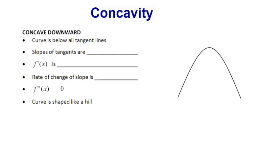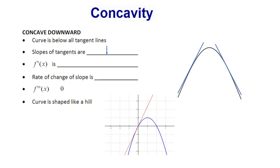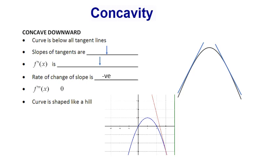Concave downward — the opposite is true. The tangent lines are now all above the curve. The slopes of these lines follow a decreasing pattern. Watch the tangent line as it moves along the surface of the curve — this time it rotates in a clockwise direction, meaning the slopes are decreasing. It started off positive, flattened out, then went negative. So if slopes are decreasing, the first derivative is also decreasing. The rate of change of slope is negative, meaning the second derivative is also negative, and the curve is shaped like a hill.